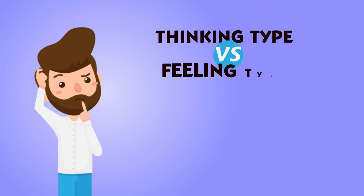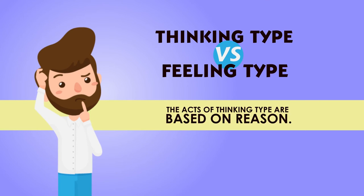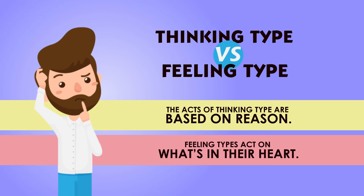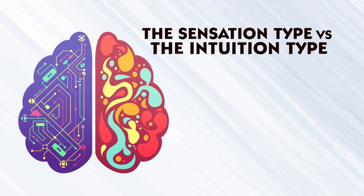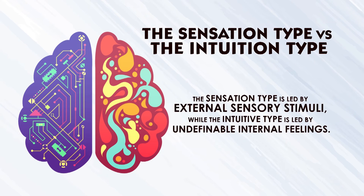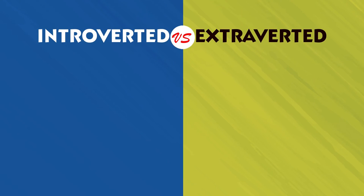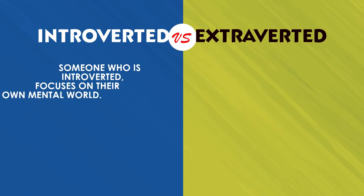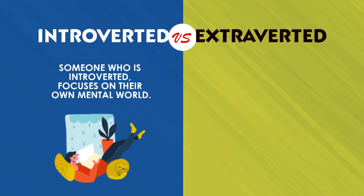Thinking type versus feeling type: the thinking type acts based on reasons, while the feeling type mostly goes by their heart — they act on what's in their heart. Then sensation type versus intuition type: by sensation we mean being influenced by external sensory stimuli, so these people's actions are led by what is outside of them. The intuitive type is led by internal feelings which are sometimes undefinable.